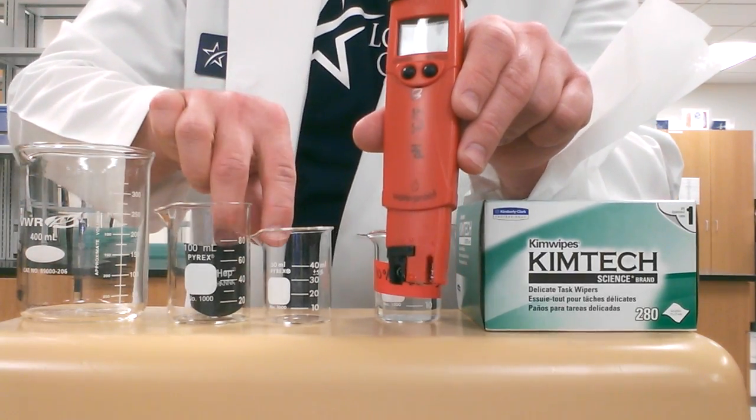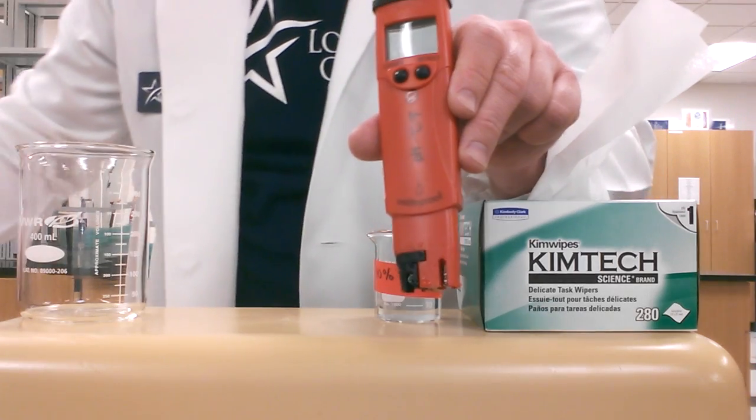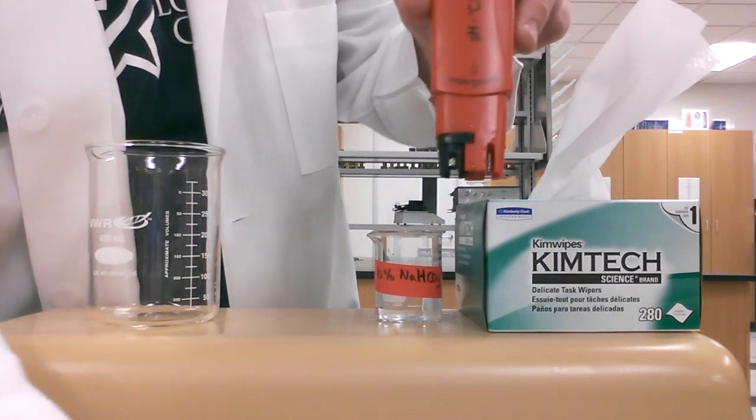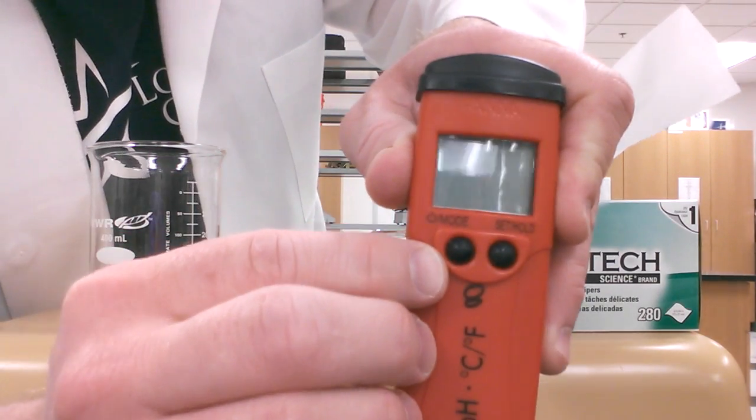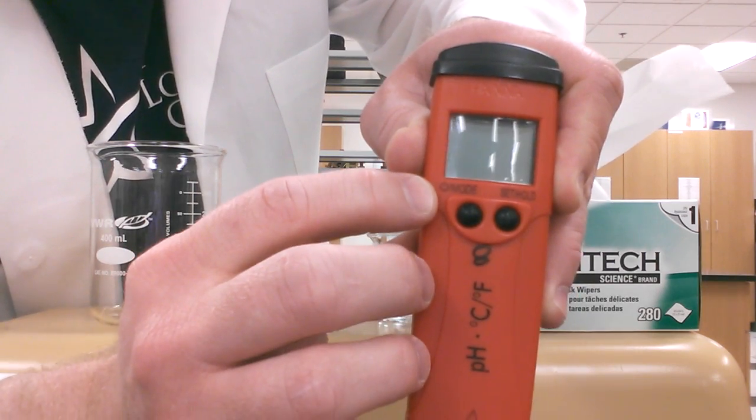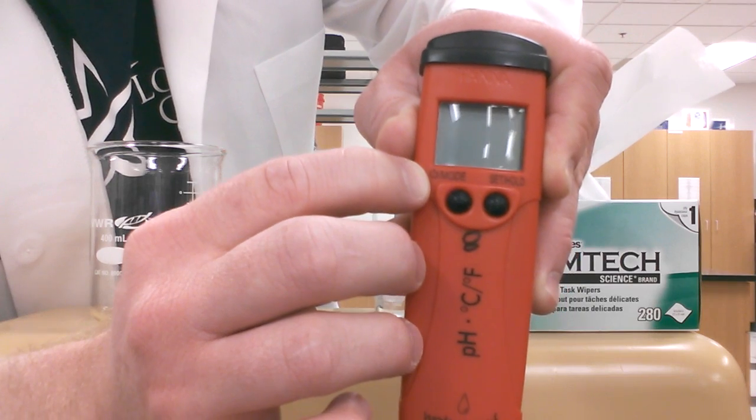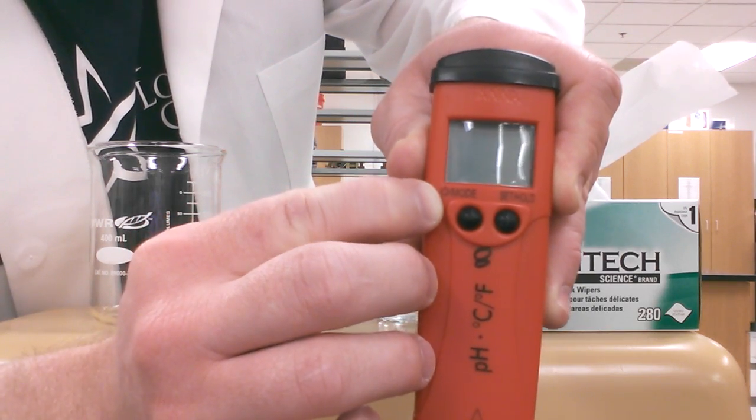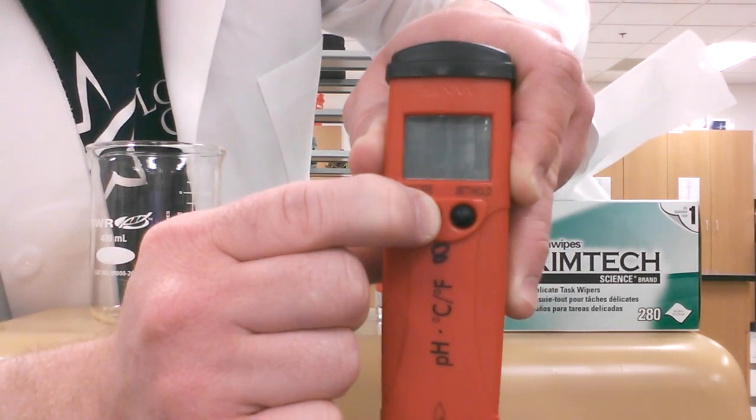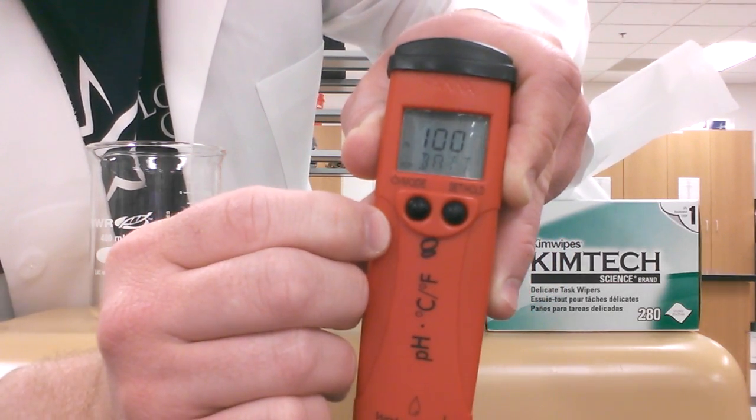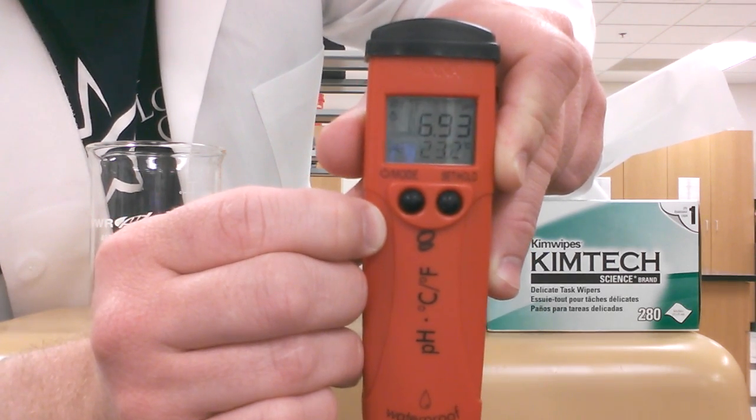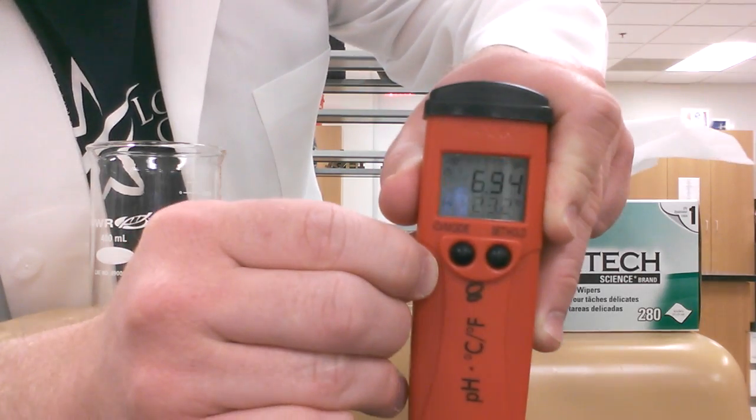Once we set that aside, we're ready to go. We're going to turn on the pH meter by holding down the power button. It has a circle with a small line through it, which most power buttons usually have, and the word mode next to it. We're going to hold that button down for a full second. There we go.